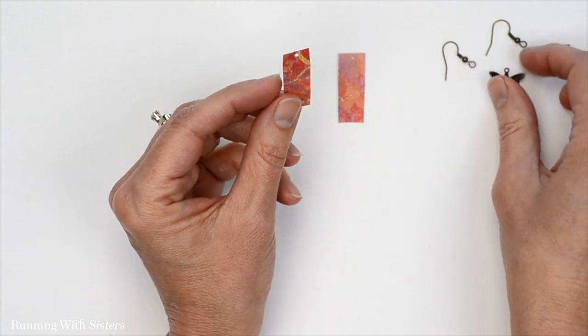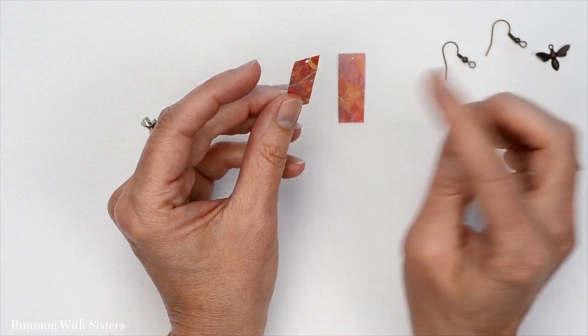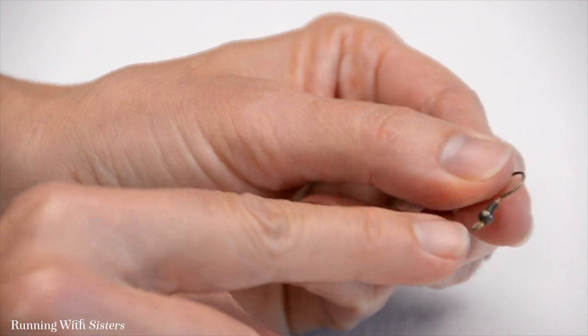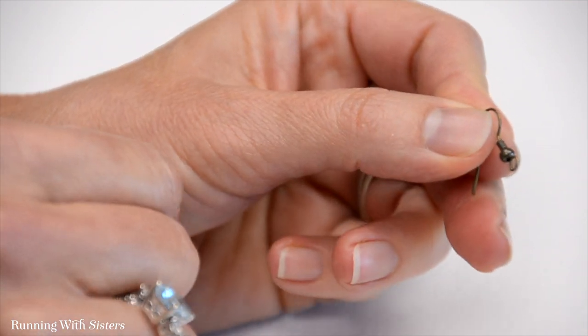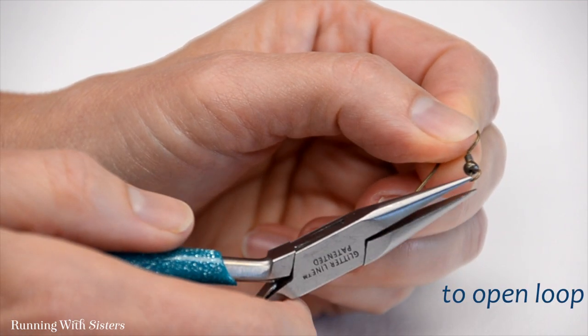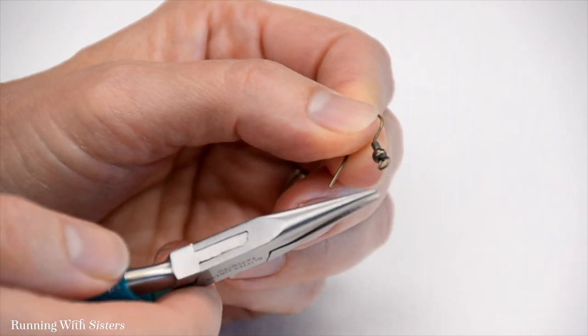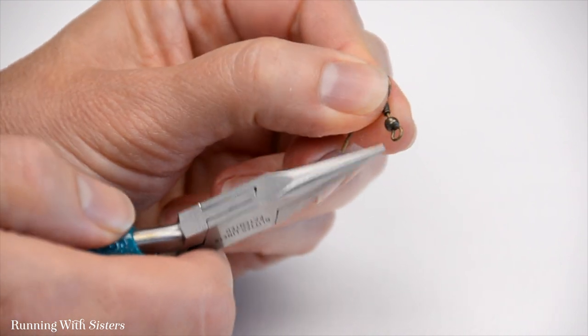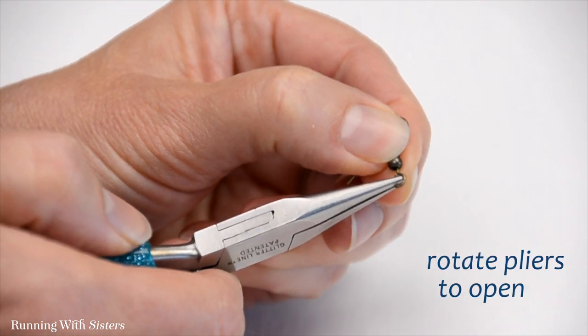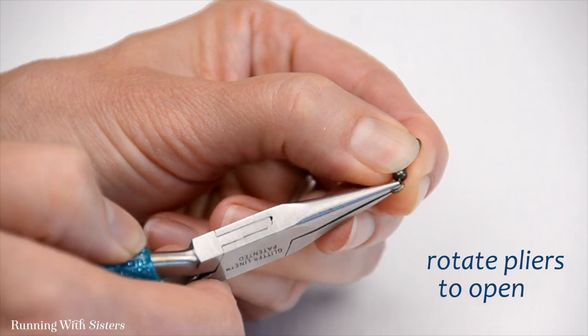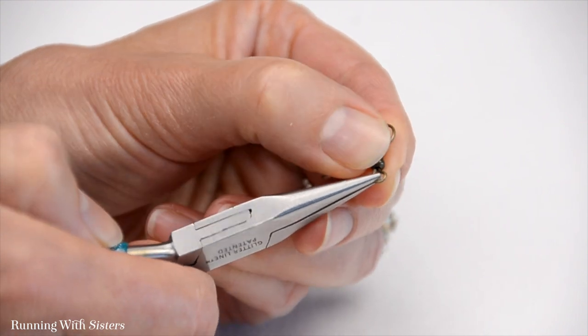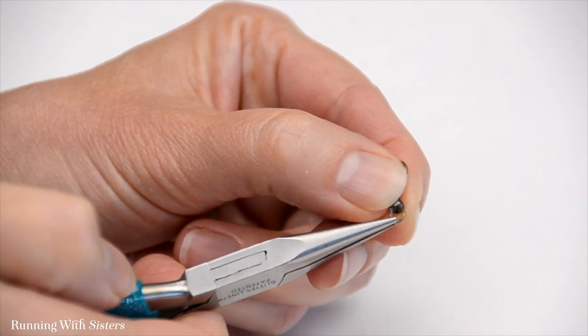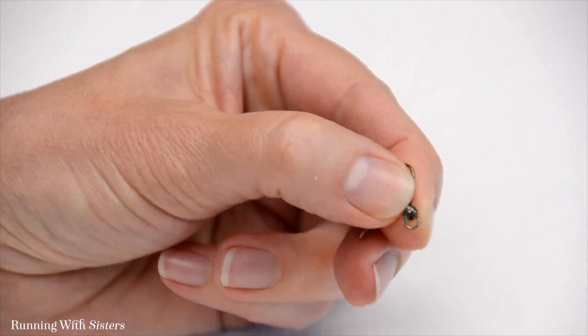Now we want to attach our bee charm and our earring wire. We're going to start with our earring wire. I'm going to open the loop, this little loop at the bottom of the earring wire. I'm going to use chain nose pliers to open that loop. The way I'm going to do that is grab onto the side that has the little cut in it. Do you see there's a little cut right there? I'm going to rotate out. What that does is keeps the loop in a circle. You don't want to pull it toward you or misshape it or make the little loop misshapen. We want to keep it nice and round.